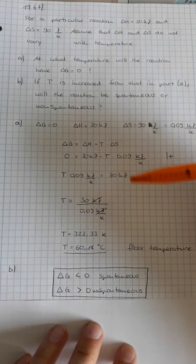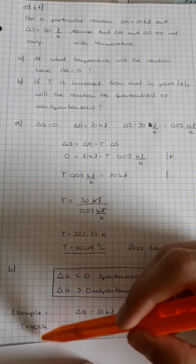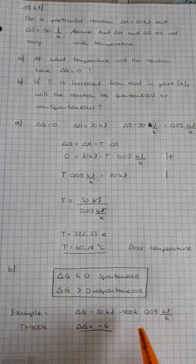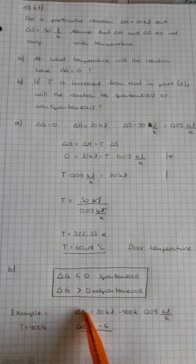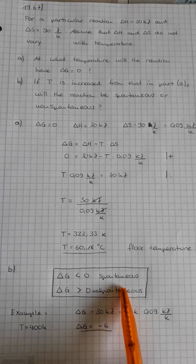For example, if we choose a higher temperature than 333 kelvin, like 400 kelvin, we would get a result of minus 6, which is negative. And that also shows us that we got a spontaneous reaction.